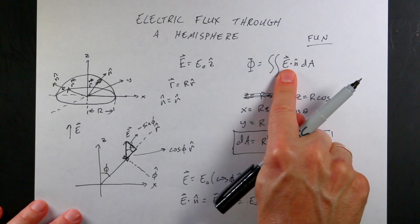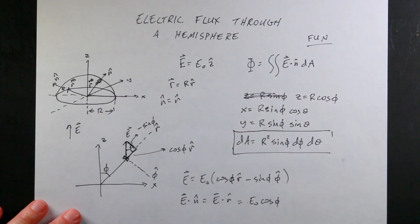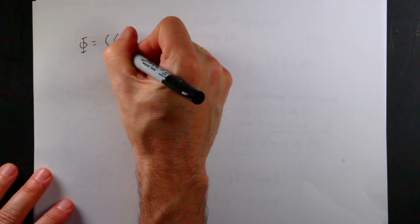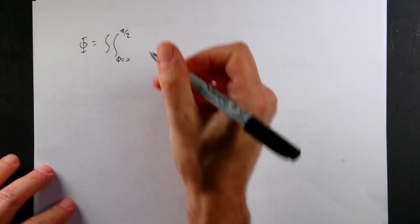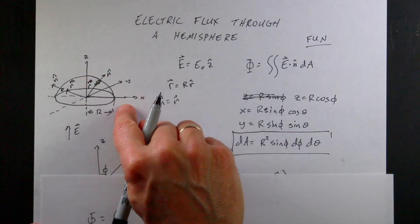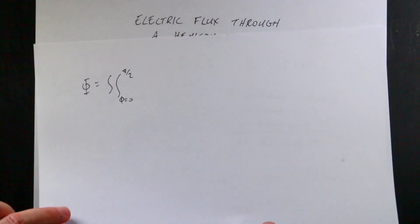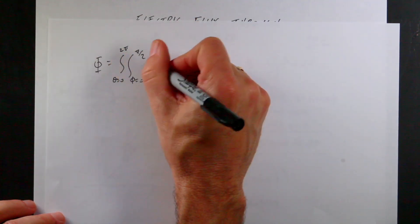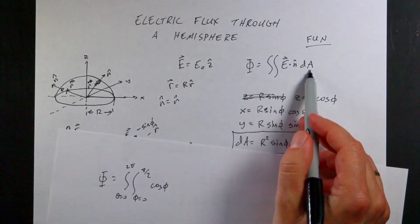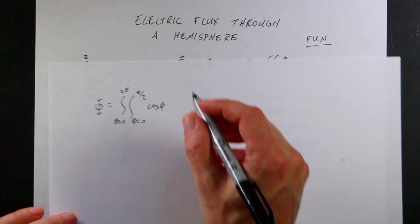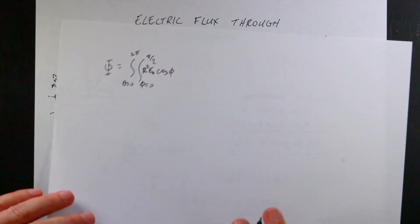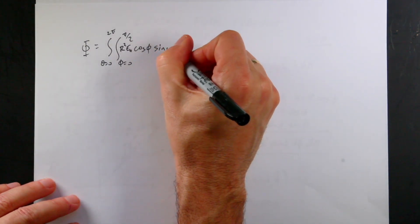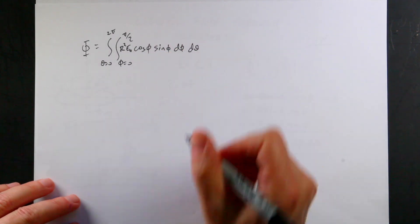Now I got rid of the vector. I can write this as a double integral. So I have Φ equals the double integral. I'm integrating φ from 0 to π/2 — not to π because I'm only going over the hemisphere — and for θ I'm going all the way around, so θ goes from 0 to 2π. Then I have cosine φ times my dA, which is R-squared sine φ dφ dθ. So I have R-squared e0 cosine φ sine φ dφ dθ.